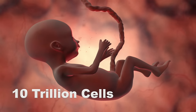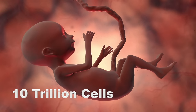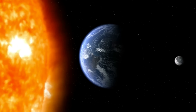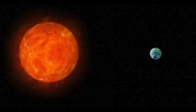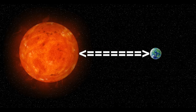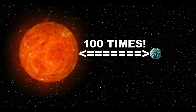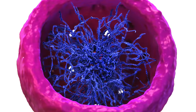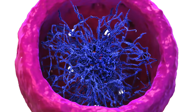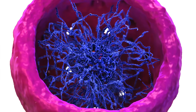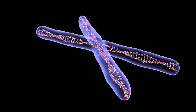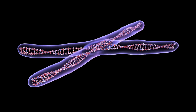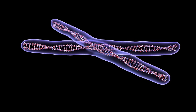You have approximately 10 trillion cells in your body. And if you were to stretch out all your DNA from every cell, it would reach from the earth to the sun a hundred times. That is a lot of DNA! DNA strands are so long that they must be packaged specially so they can fit into the nucleus of every cell — they are wound up tight and form structures called chromosomes.